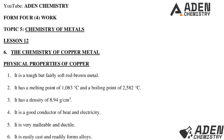Kindly stay with us until the end of the video. To start, the first part — the physical properties of copper metal: copper is tough but fairly soft, a red-brown metal. Number two, it has a melting point of 1080°C and a boiling point of 2582°C. It has a density of 8.94 grams per centimeter cubed.